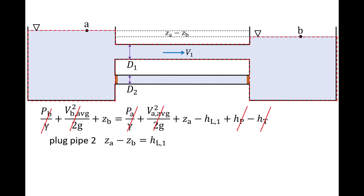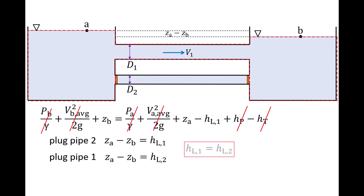Notice our decision to plug up pipe 2 was arbitrary. If we plugged up pipe 1 and analyzed the flow through pipe 2 instead, we would find that ZA minus ZB is equal to HL2. Therefore, for a parallel pipe configuration, the head losses through the pipes are equal.